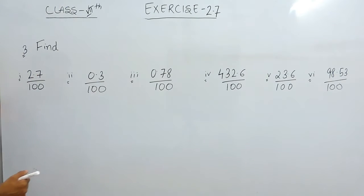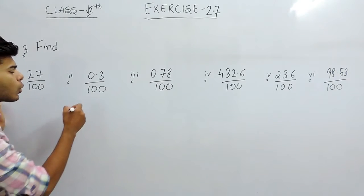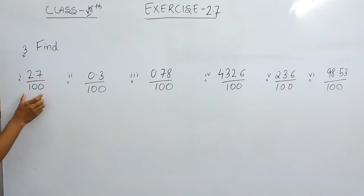As I told you, whenever there are multiples of 10 in the denominator, we shift the decimal towards the left according to the given number of zeros. In this question there are two zeros, so the decimal point will be shifted two points towards left.